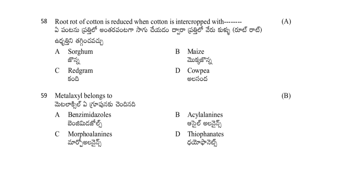Metalaxyl belongs to which group? Options: benzimidazoles, acyl alanines, morpho alanines, or thiophanates. The answer is B — acyl alanines.